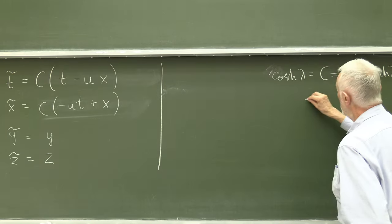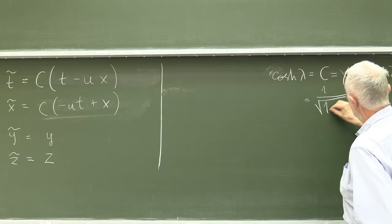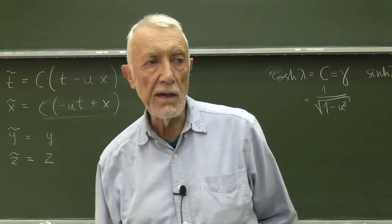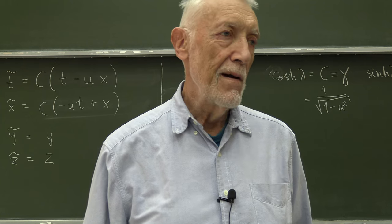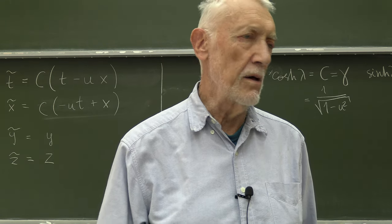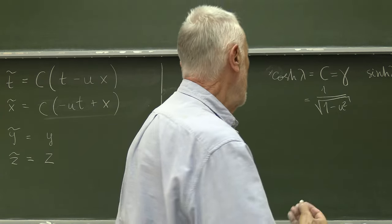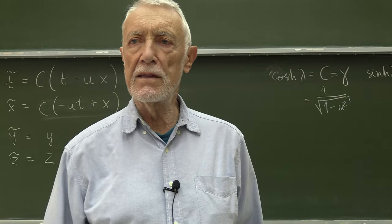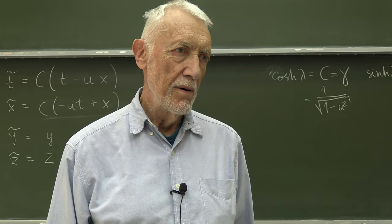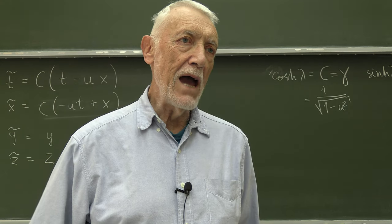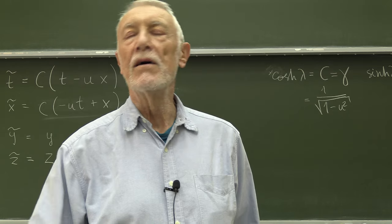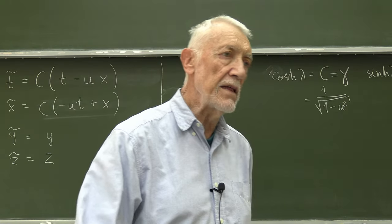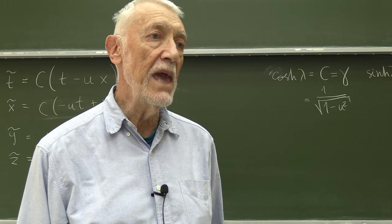It is nothing but 1 over square root of 1 minus u squared. By the way, u is velocity but as a percentage of the speed of light, because we use the same units for time and distance, like astronomers do. They calculate time in years and distance in light years.